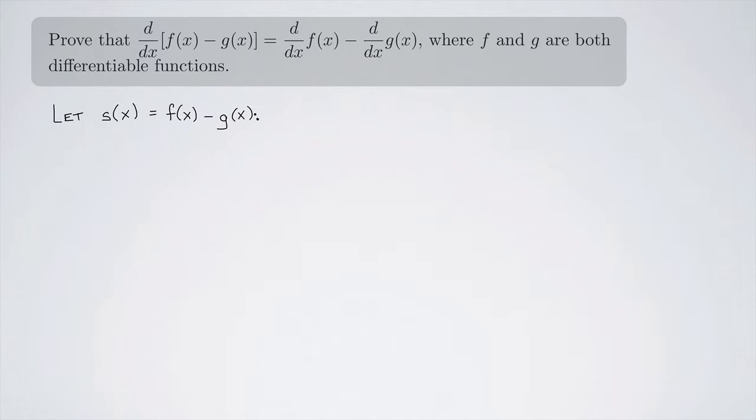And now I'm going to go ahead and calculate, using the limit definition of the derivative, what the derivative of s would be. So this would be s prime of x, and that's going to be the limit as h approaches zero of s of x plus h minus s of x all over h.